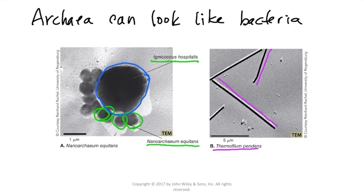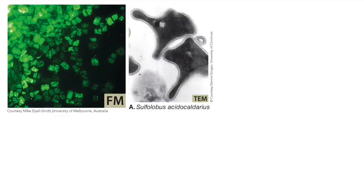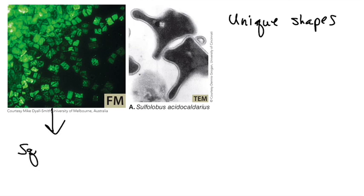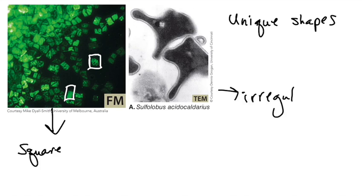Some archaeons can actually get up to 100 microns in length. Of course, many have unique shapes and sizes. I particularly like this one — you can see that they're actually square. The archaeons themselves make these square and rectangular shapes, kind of more like plant cells, only they are still single-celled organisms. And Sulfolobus here is kind of an irregular shape. It can also be pleomorphic, although it does still contain a cell wall.